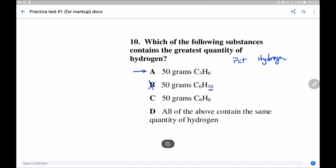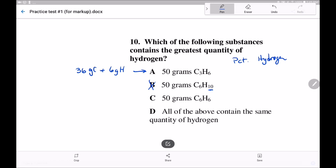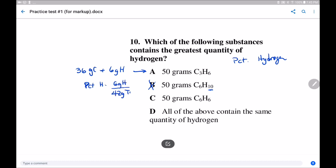A is pretty simple to do. It's 36 grams of carbon plus 6 grams of hydrogen, so 42 grams total. Percent hydrogen is 6 grams of H out of the 42 grams total. Notice I'm labeling every number, there's nothing left to guesswork.